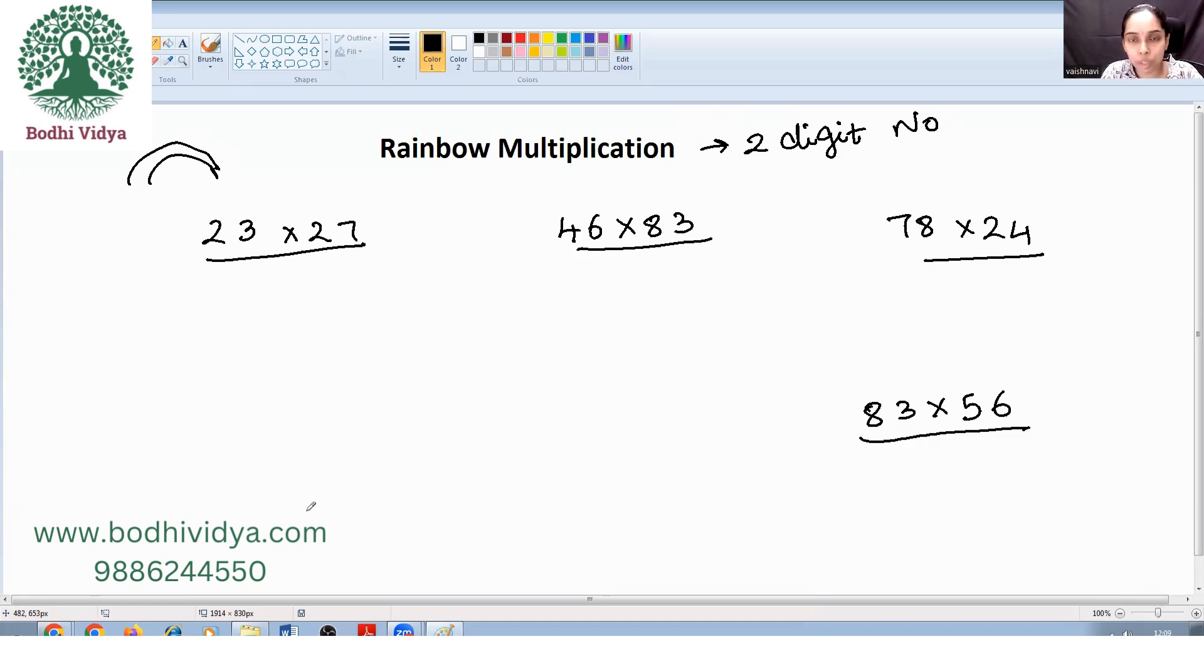So first what we are supposed to do is, we have two digit numbers. So we have tens place and ones place. First, we need to multiply both tens place numbers. Then multiply both ones place numbers.